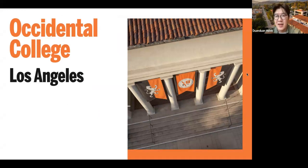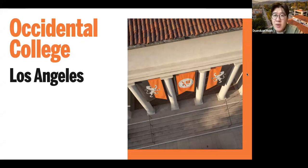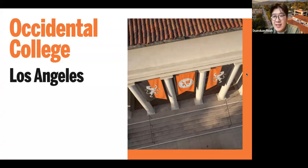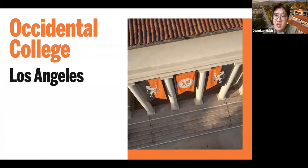Now I want to talk about my institution, Occidental College, and who we are to give an example of what a liberal arts college does. We're located in Los Angeles. Fun facts — we're the second oldest institution in Southern California. We were founded before the first road was paved in LA, and before the first movie was shot in Hollywood. We were founded in 1887. The longest sports rivalry in Southern California is not USC and UCLA — it's actually Occidental College and Pomona College. The first college founded in Southern California was USC, the second was Oxy, and the third was Pomona.